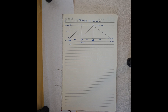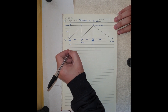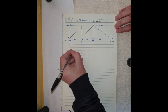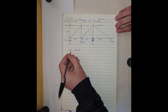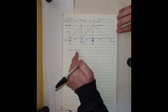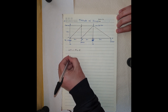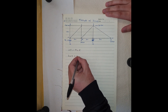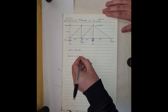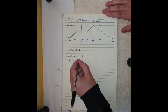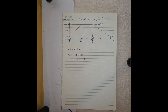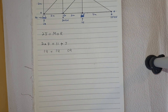Before we solve this truss, we should find out whether it is statically determinate or not. The formula is: 2j = m + r, where j is the number of joints, m is the number of members, and r is the number of reactions. We have 2×7 = 14, and 11 members plus 3 reactions equals 14. So our truss is statically determinate.